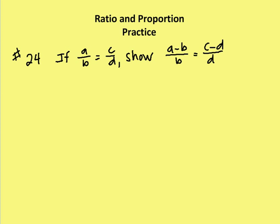Number 24 in our book says, if A over B is equal to C over D, show that A minus B over B is equal to C minus D over D.